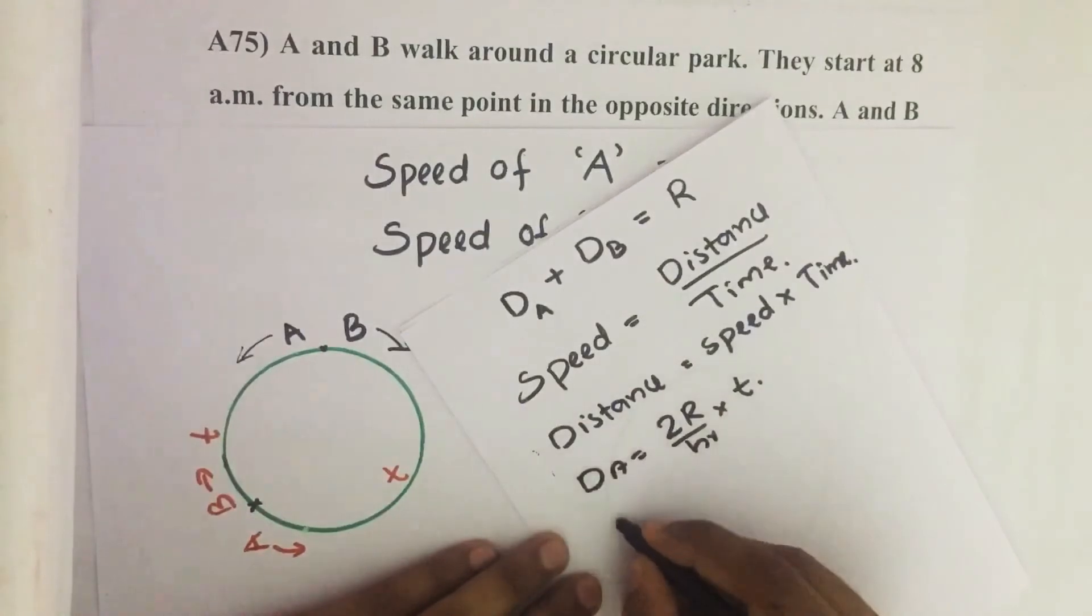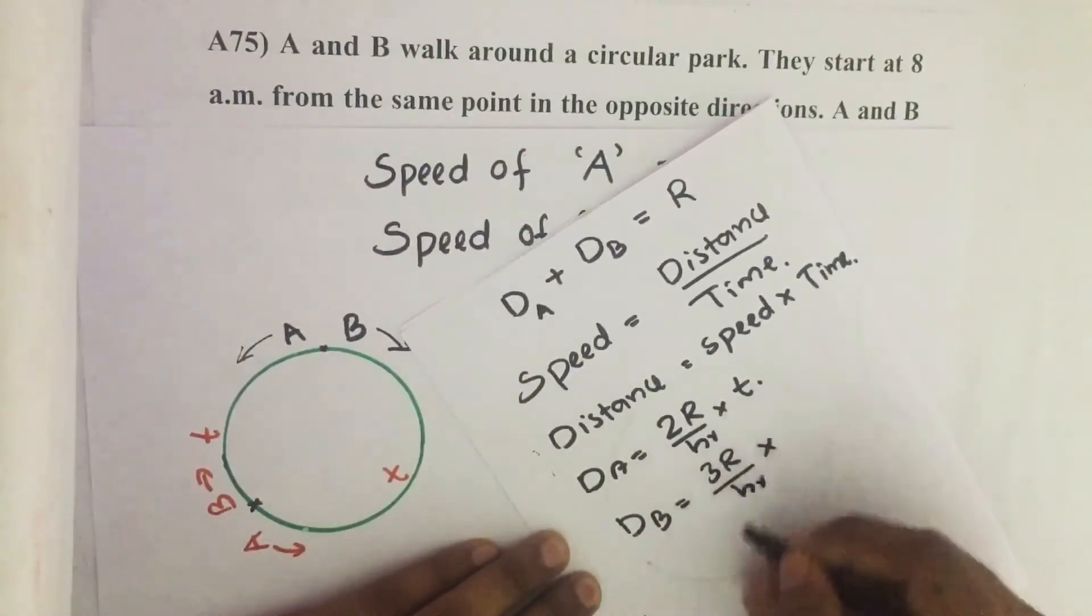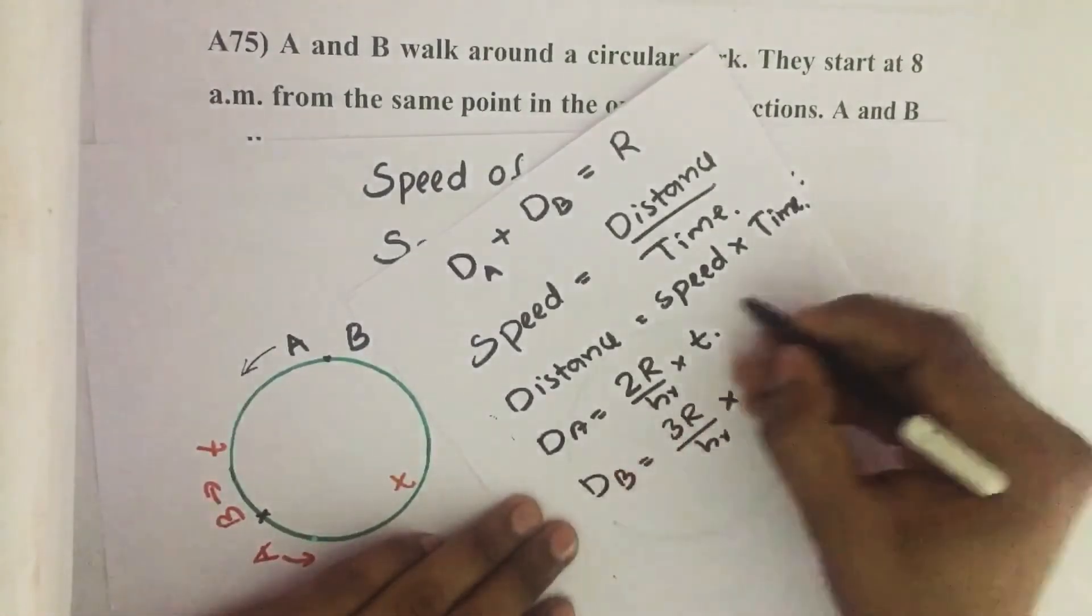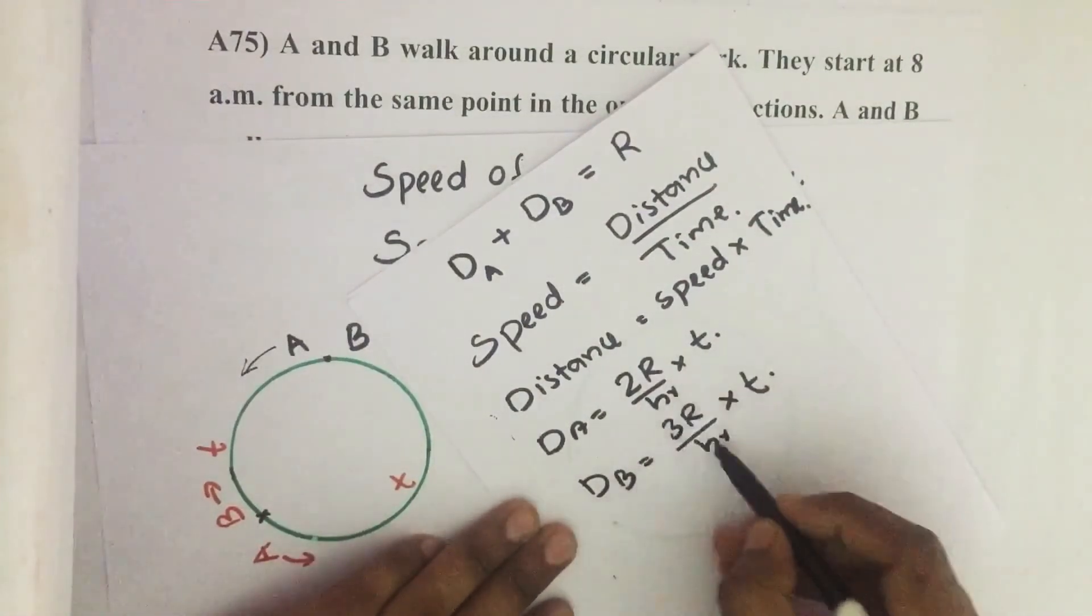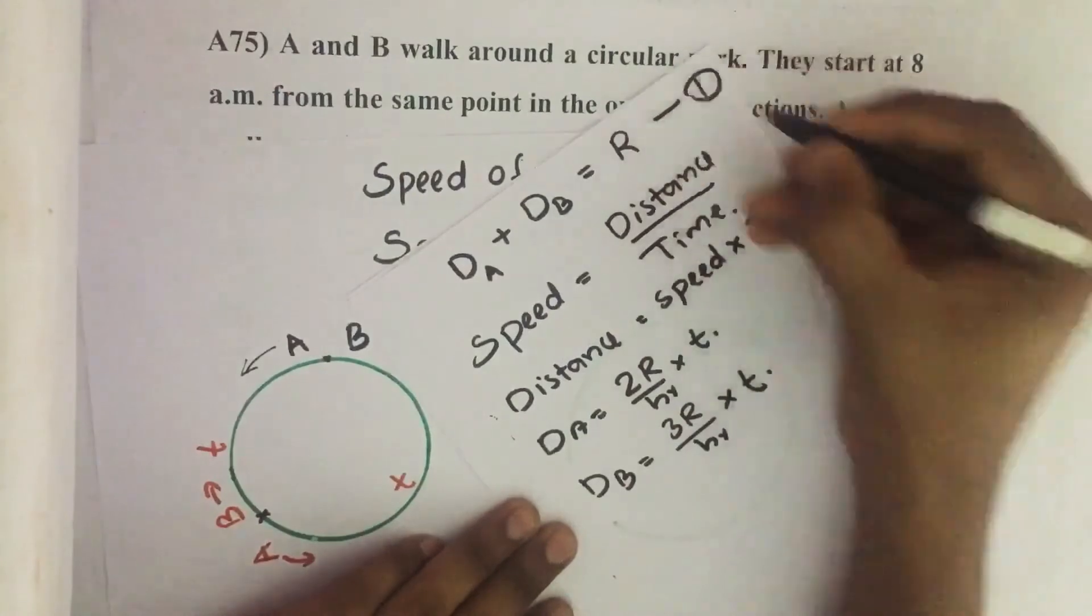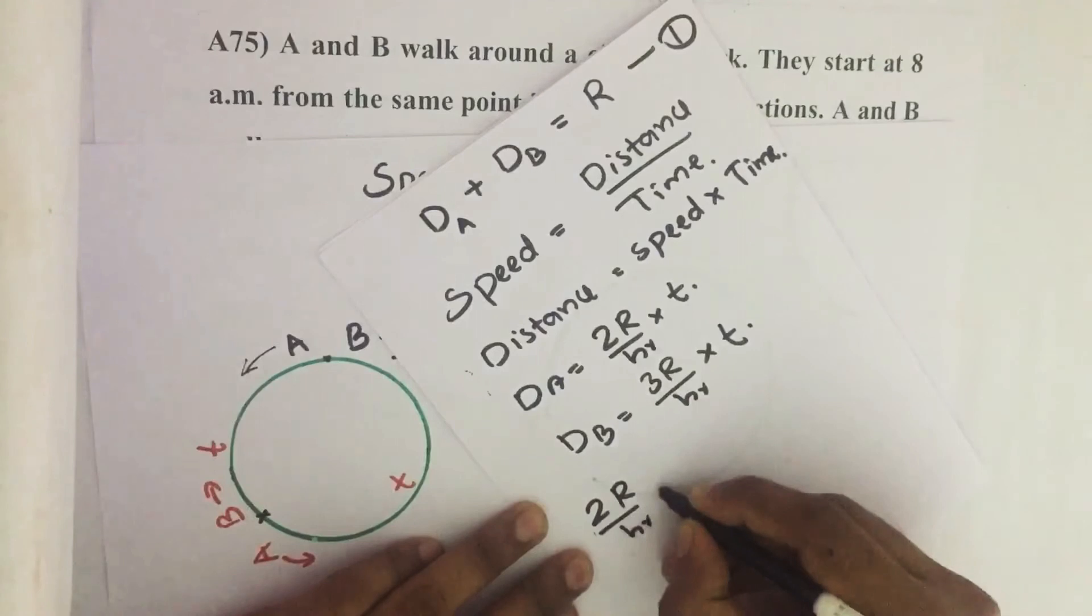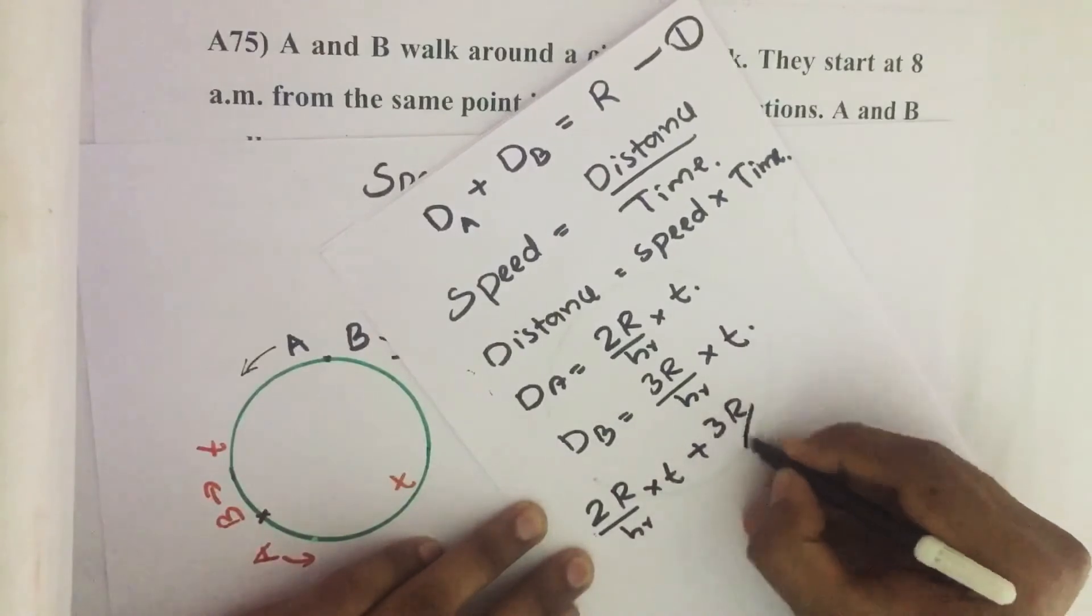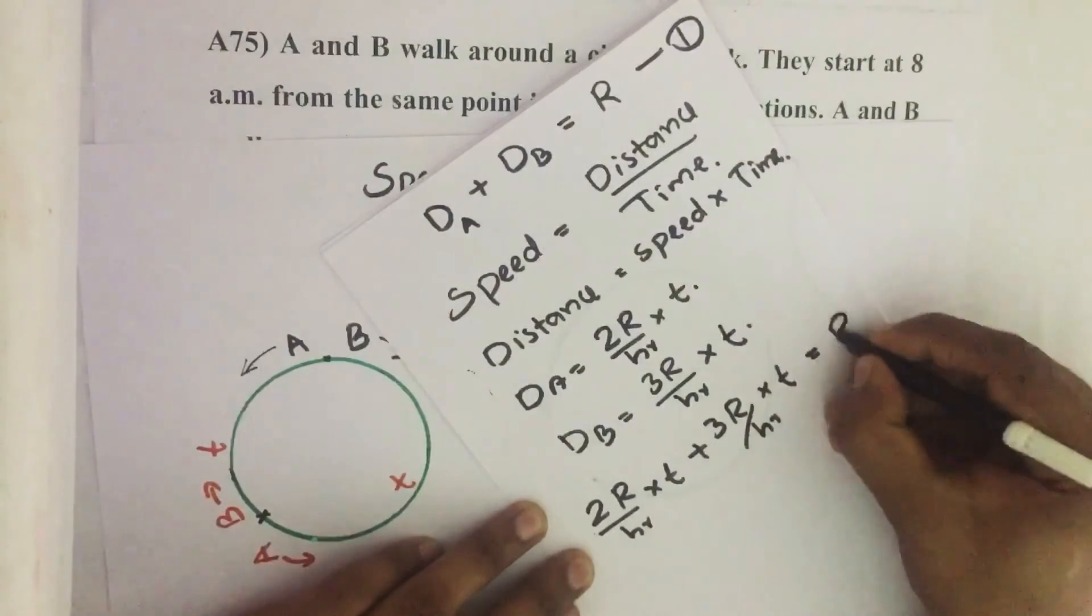Similarly, DB equals 3R per hour into T. So just substitute values of these two values in this equation. Then we get 2R per hour into T plus 3R per hour into T equals one complete round.